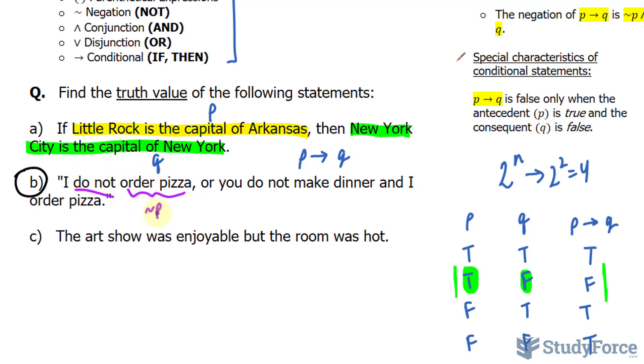And this do not suggests that it's negated, so I'll put a tilde symbol in front for not P. And then we have this disjunction or, which is symbolized as this V. You do not make dinner - making dinner is another component of this sentence, of this compound statement.